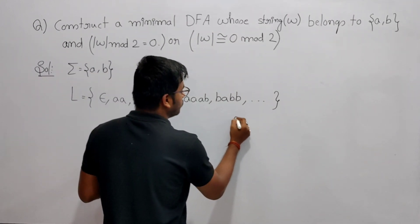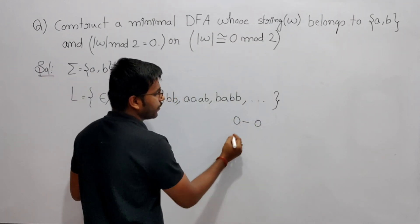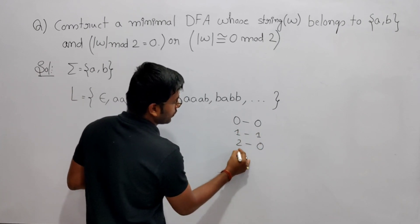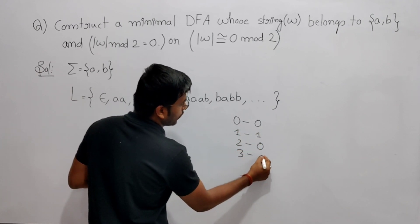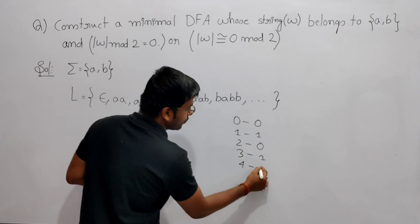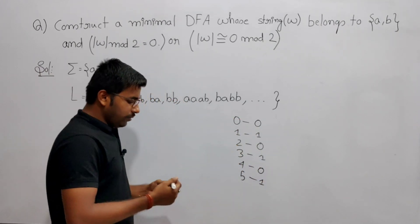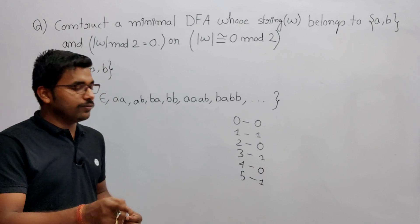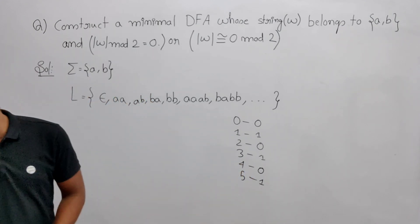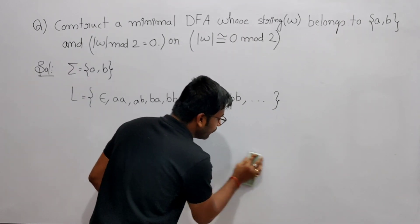For example: number 0 gives remainder 0; 1 gives remainder 1; 2 gives remainder 0; 3 gives remainder 1; 4 gives remainder 0; 5 gives remainder 1 — and so on. So the remainders alternate: 0, 1, 0, 1, 0, 1. It keeps cycling like this.